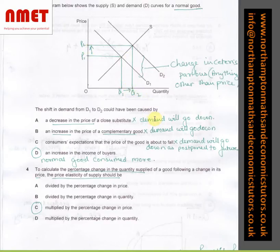I have used process of elimination explaining why A, B and C are not the answers. I have put down reasons over here. Demand will go down, demand will go down and D1 will go down as postponed to future. So an increase in income of buyers, we know it's a normal good and that is why the D has shifted outwards. So normal goods consumed more, D is the answer.